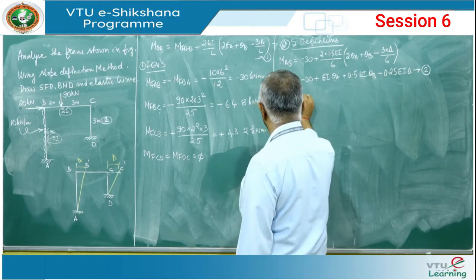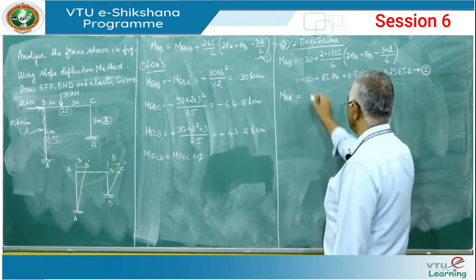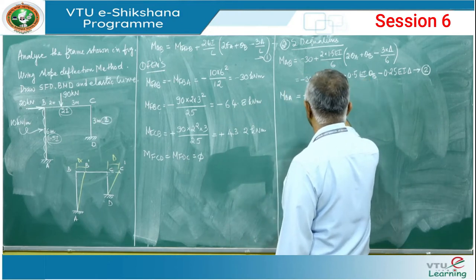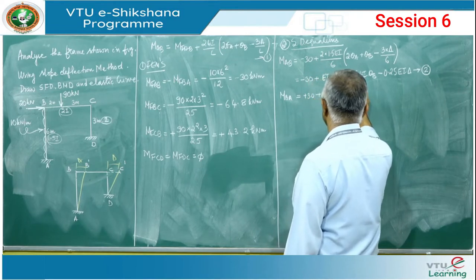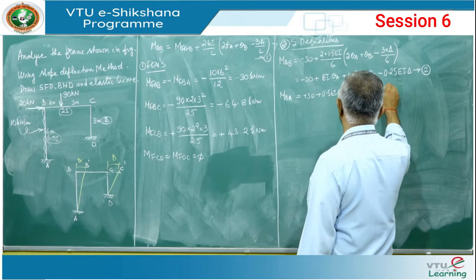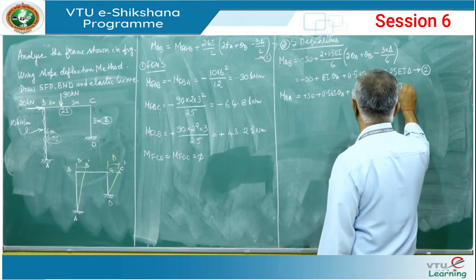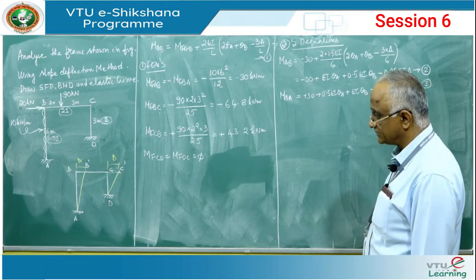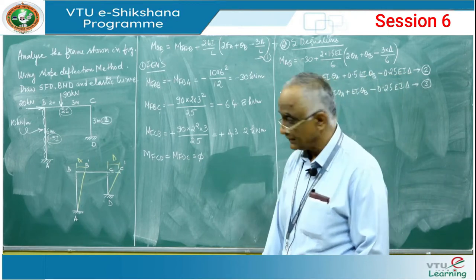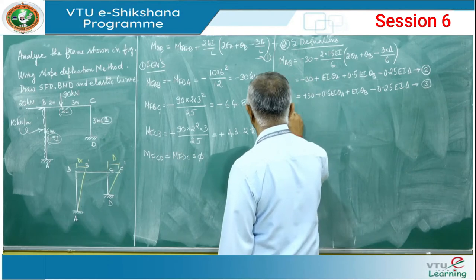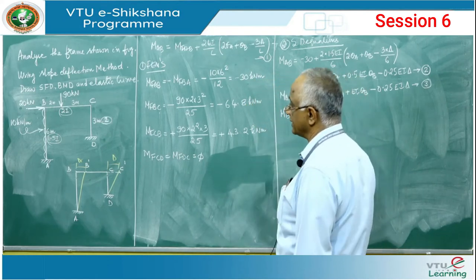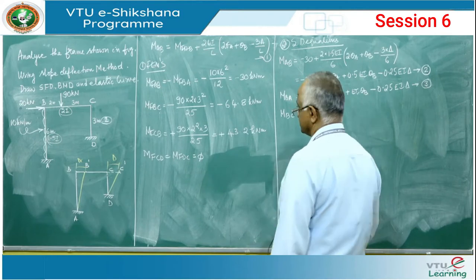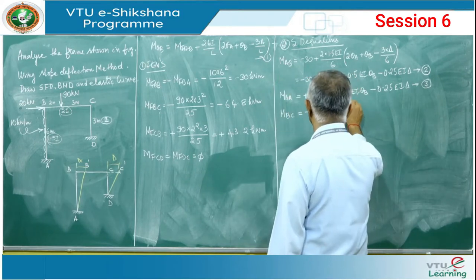For M_BA (equation 3), the fixed end moment becomes +30 and coefficients of theta_a and theta_b are exchanged: M_BA = +30 + 0.5EI·theta_a + EI·theta_b - EI·delta. The delta term sign remains the same. For M_BC, the horizontal member has no delta term; EI = 2, span = 5: M_BC = -64.8 + (2×2EI/5)(2·theta_b + theta_c).